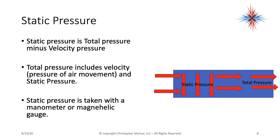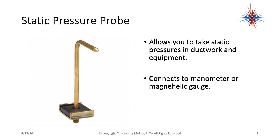Static pressure is the total pressure minus the velocity pressure. Looking at my diagram: I have air blowing through the ductwork. If I measure the pressure of the air in this airstream, I'm getting total pressure. So I have to remove the pressure of the air moving to find the static pressure, which is the outward pressure against the sides of the ductwork or equipment. Static pressure is taken with a manometer or magnehelic gauge using a static pressure probe, which connects to the gauge and removes the velocity pressure from the measurement.